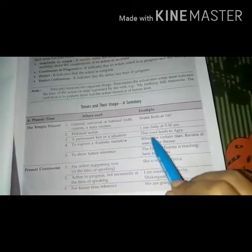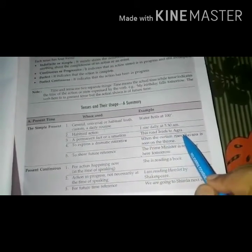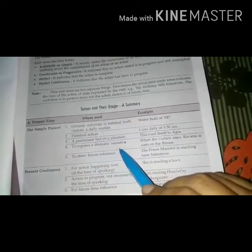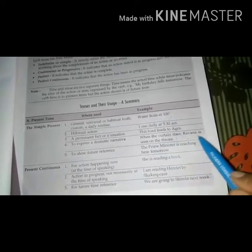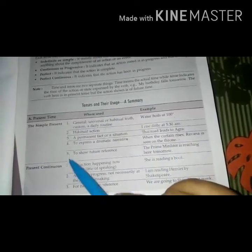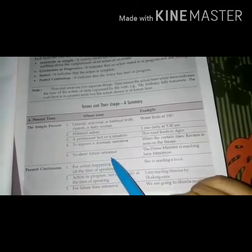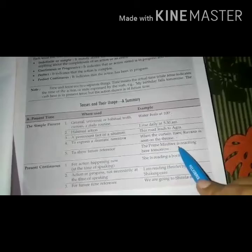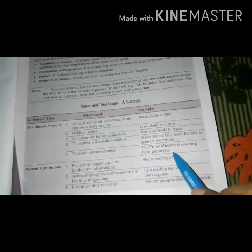A permanent fact or a situation: This road leads to Agra. Number four, to express a dramatic narrative: When the curtain rises, Ravana is seen on the throne. Number five, to show future reference: The prime minister is reaching here tomorrow.